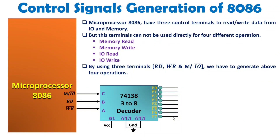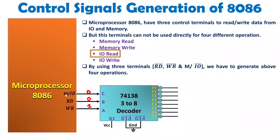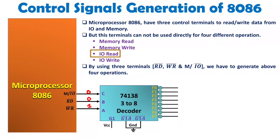Now let us understand how to generate the control signals. For IO Read operation, since it is an IO operation, M/IO bar should be 0. For read, Read bar should be 0 and Write bar should be 1. So the input is 0, 0, 1 — which selects Y1. Therefore, at Y1 we will have IO Read bar. The bar indicates active low selection.